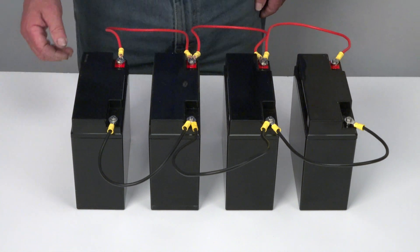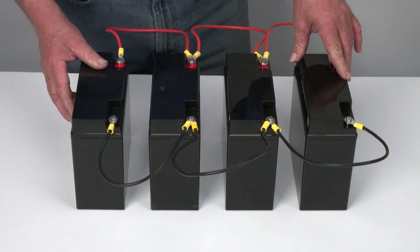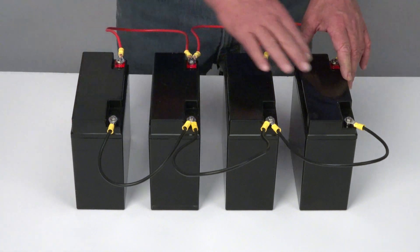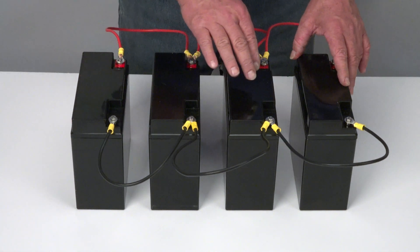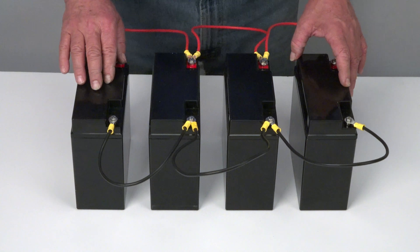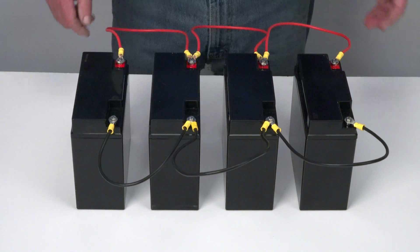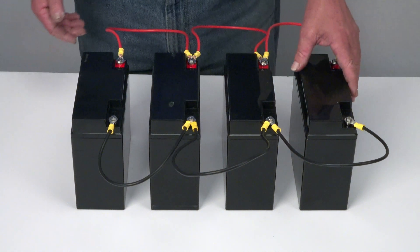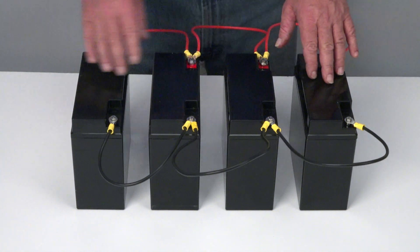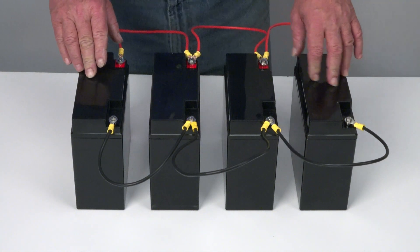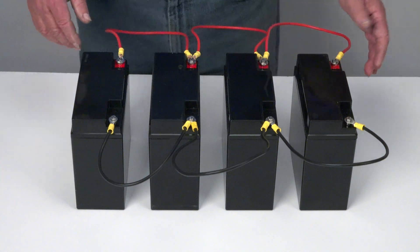And so, essentially we have a 12 volt system. But instead of 20 amps, we now have 40, 60, 80 amps. So if you're a fisherman and you're using an electric trolling motor, you can effectively quadruple your runtime in theory.